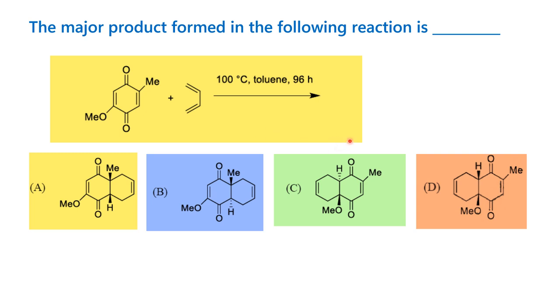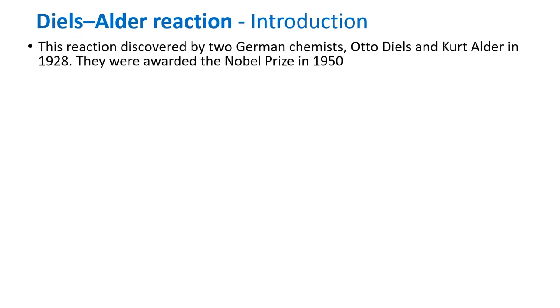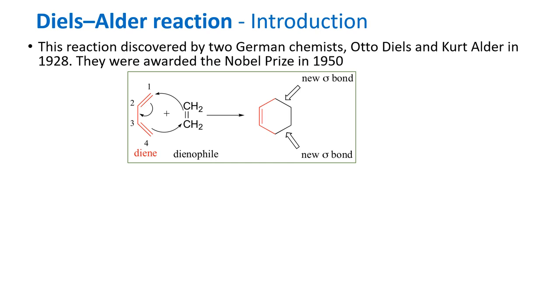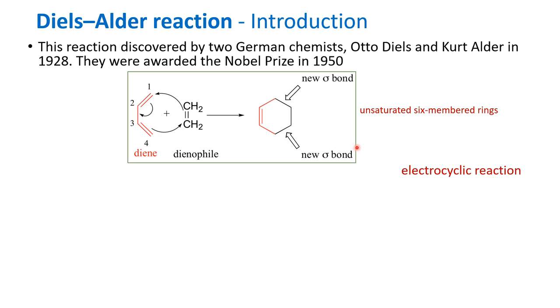Before we look into the options, let us understand what is a Diels-Alder reaction, what are the conditions for it, and how to solve a problem based on it. It is a cycloaddition reaction wherein a diene and a dienophile combine together to form a six-membered ring system. This six-membered ring system has an unsaturated bond. It is an electrocyclic reaction, also called a 4+2 cycloaddition reaction.